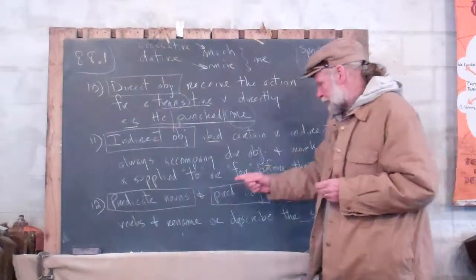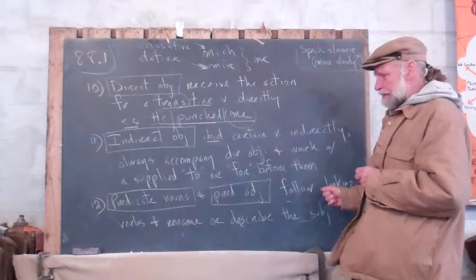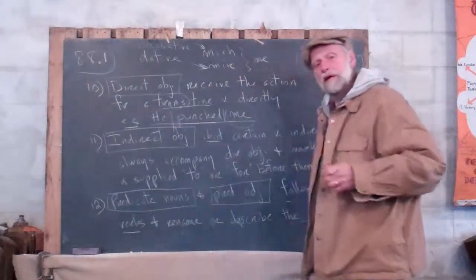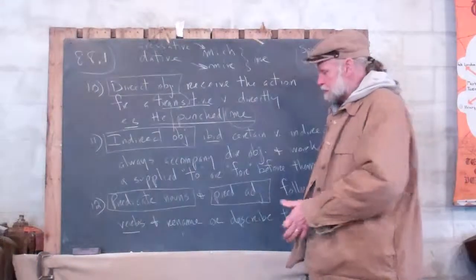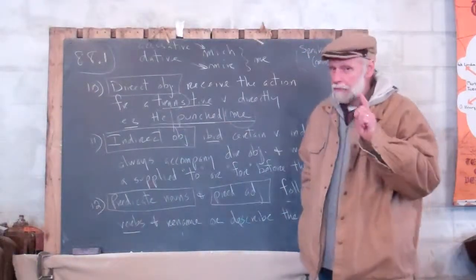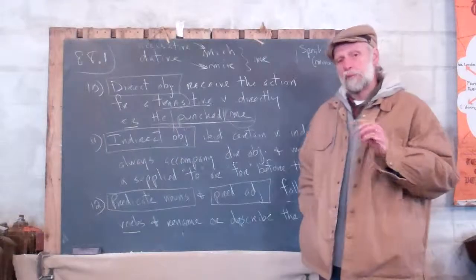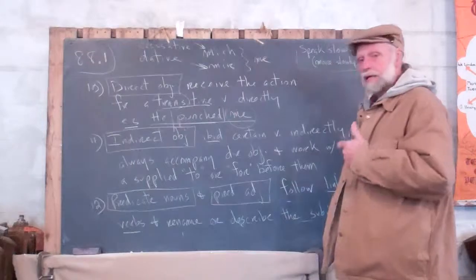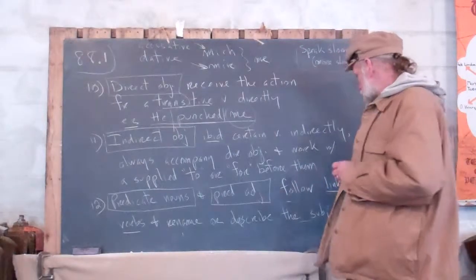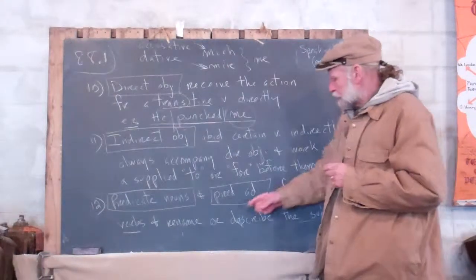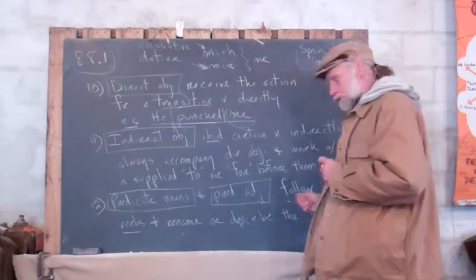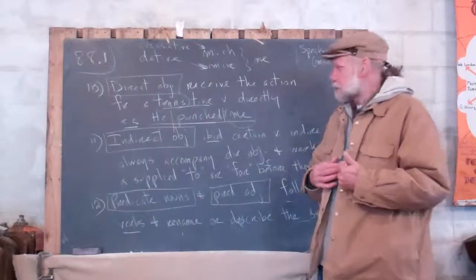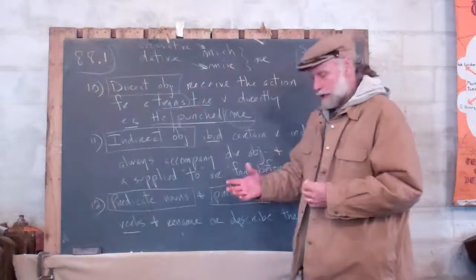Predicate nouns and predicate adjectives follow linking verbs. Linking verbs are verbs that you need to recognize. They're on that chart. Not every single one. In the British system, I believe they're called copulative verbs. But in America, we call them linking verbs. They either rename or describe the subject. But the thing is, they are in the predicate side of the clause.